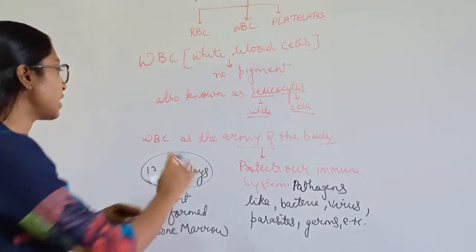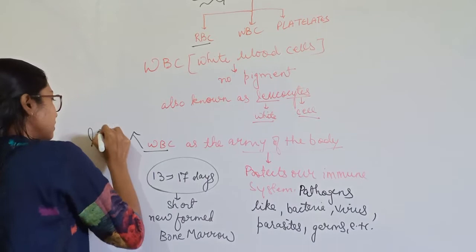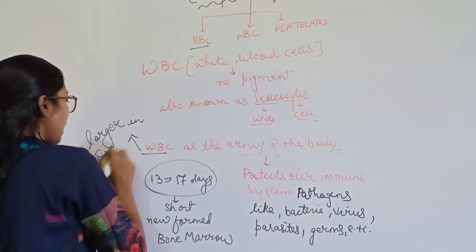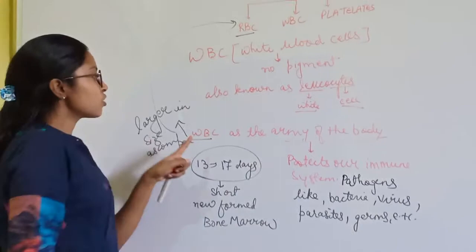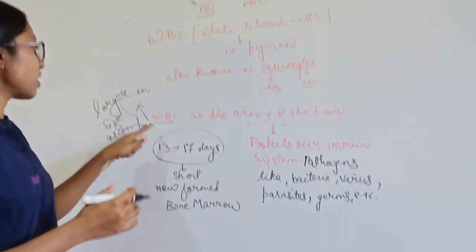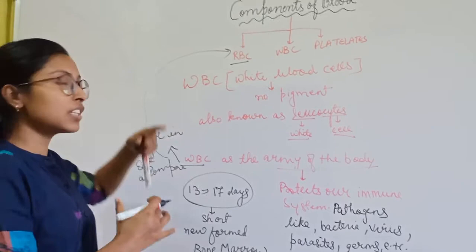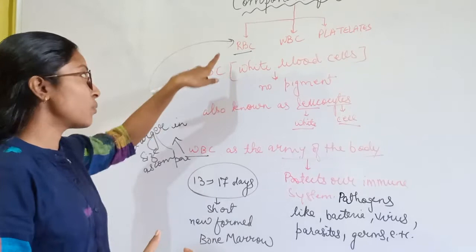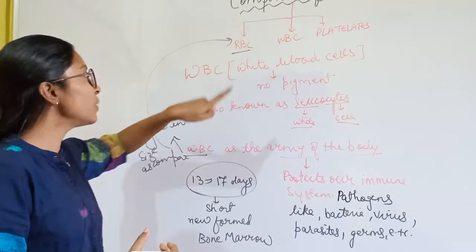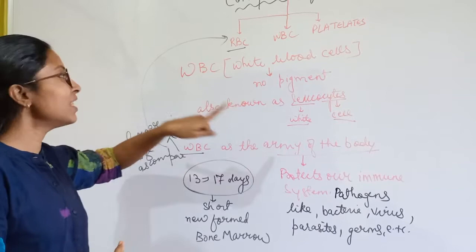If we compare the size of WBCs with RBCs, WBCs are larger in size. A key difference is that RBCs are red in color due to the presence of hemoglobin, whereas WBCs are colorless because there is no pigment present in them.